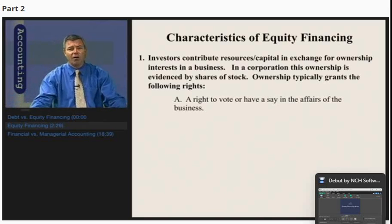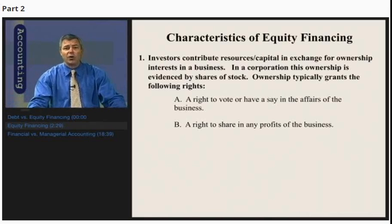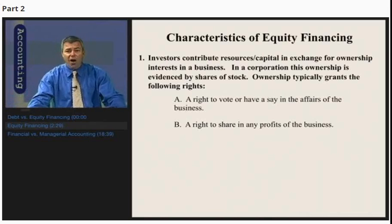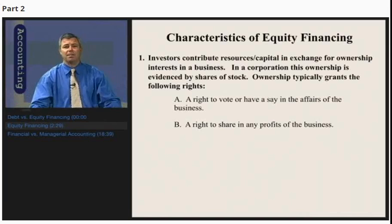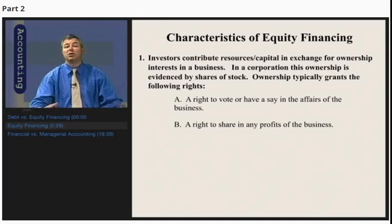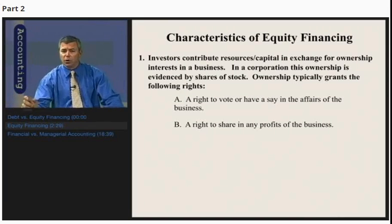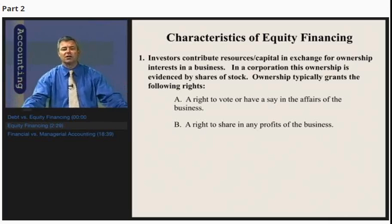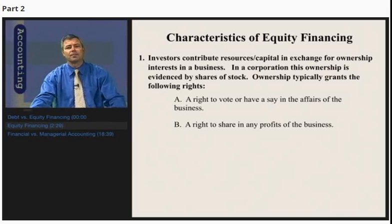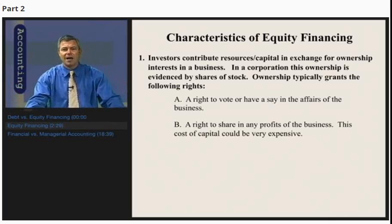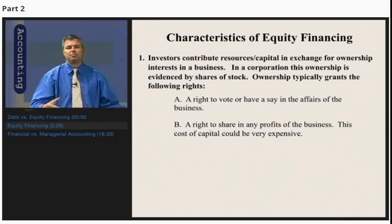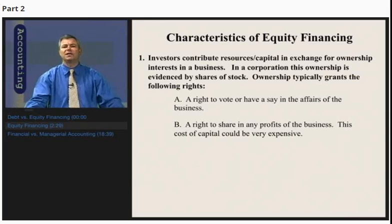Ownership in a corporation also gives that owner a right to share in any of the profits of the business. If you're a shareholder of IBM and IBM is profitable and decides to distribute some profits to the owners, you have a right to share in those profits on a per-share basis. This effectively represents a cost of capital that in many ways could be very expensive — maybe more expensive than the cost of interest associated with debt financing.